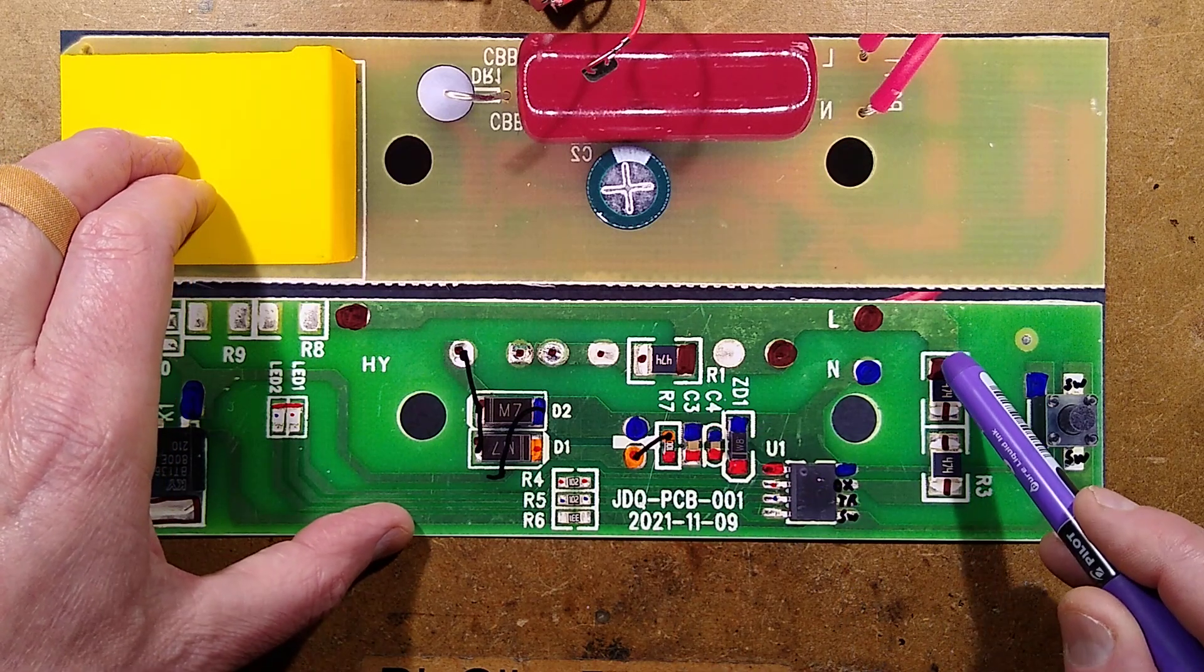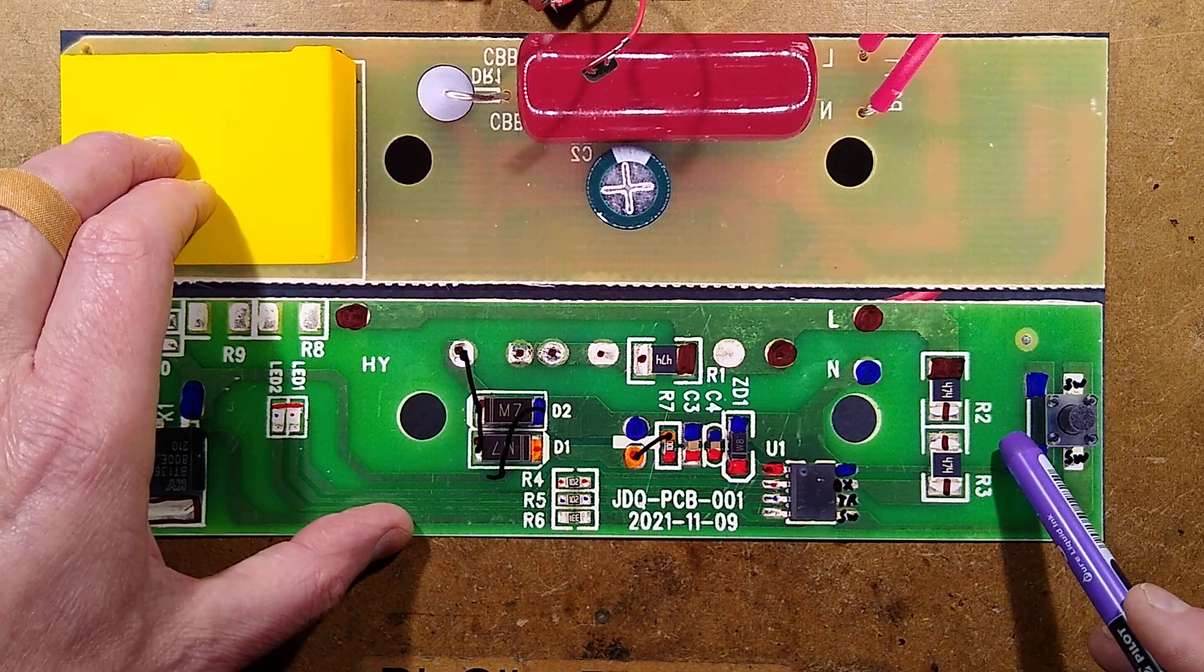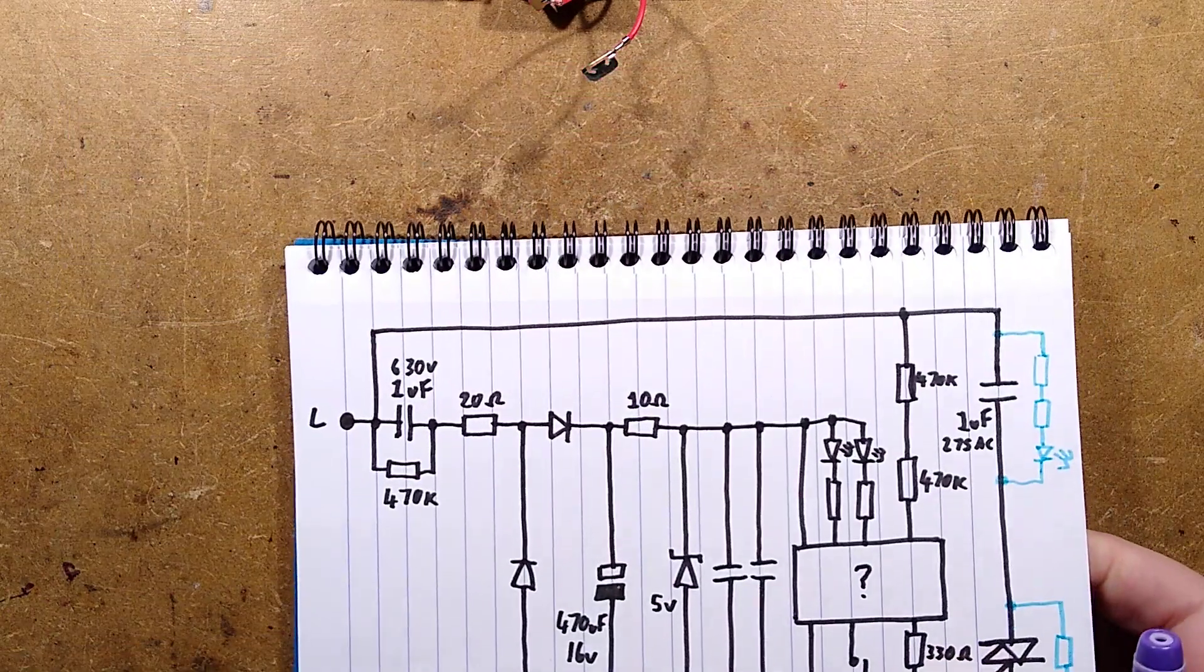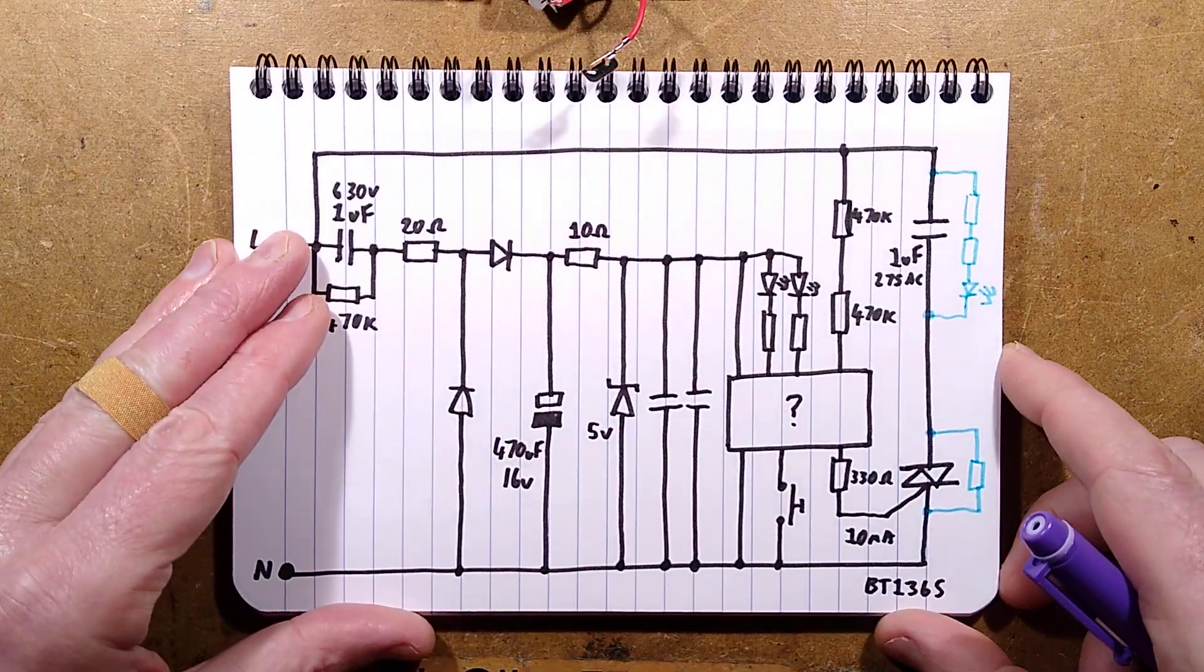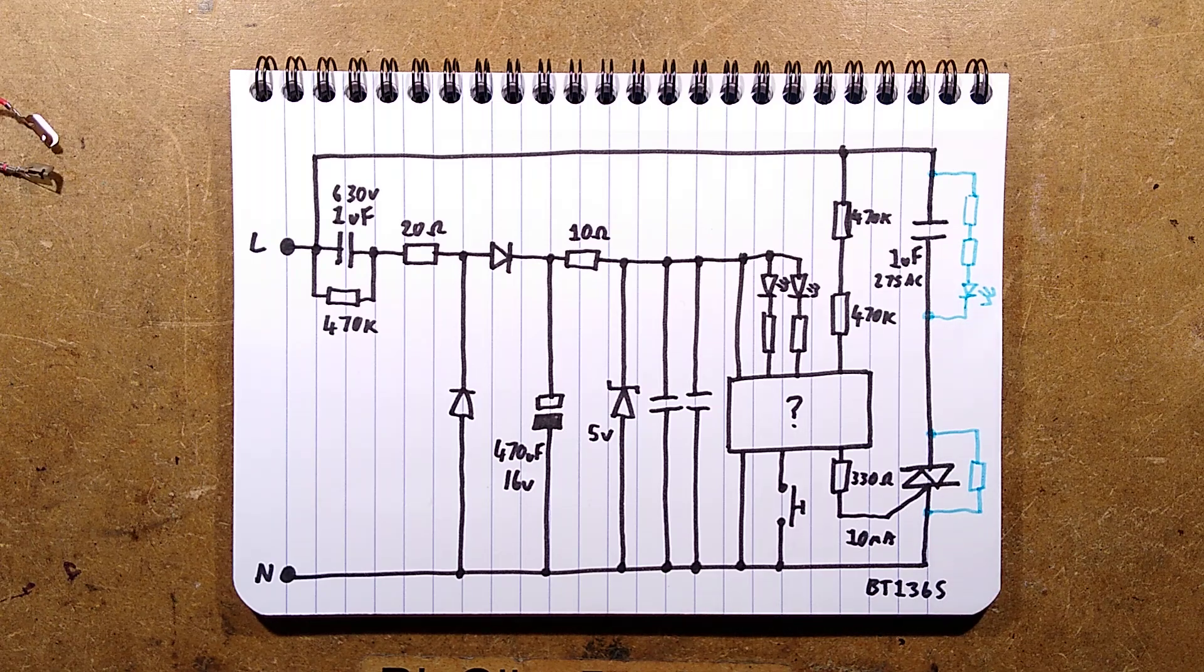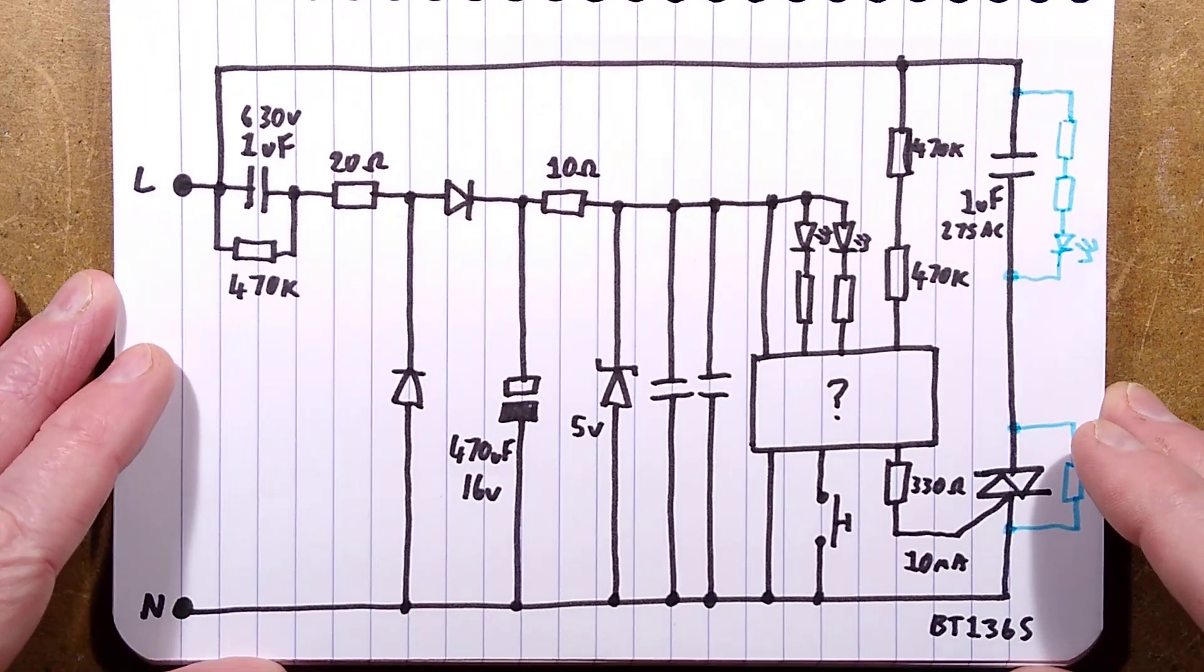The microcontroller also has a zero crossing point detection in the form of these resistors and a push button. Let me show you the schematic. The schematic has little bits of extra here in blue that are not populated for good reason. Not sure what was going through their mind there. It's very strange.